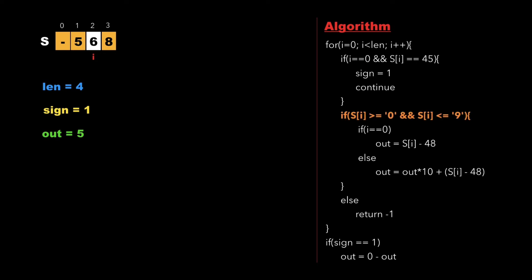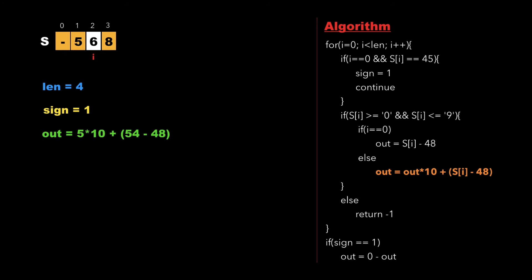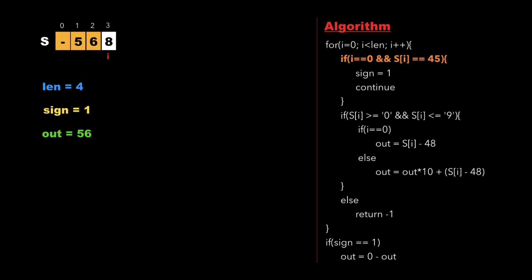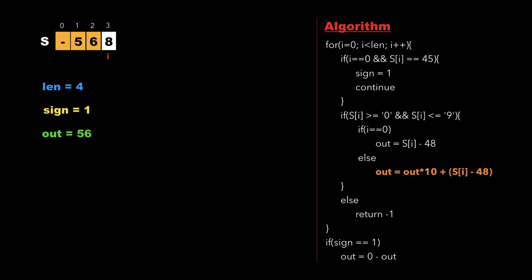Next, i points to character 6. The first condition fails; the second condition (6 between 0 and 9) is true. In the else part, out = out*10 + s[i] - 48, giving out = 56 (since ASCII of '6' is 54, minus 48 gives 6). Then i points to character 8. Similarly, the else part updates out = out*10 + s[i] - 48, giving the updated value of out as 568.